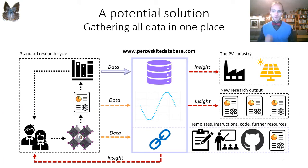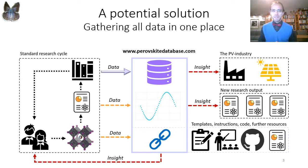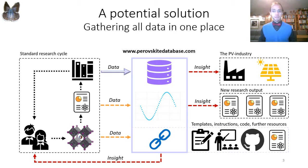A potential solution to that specific problem would be to collect all perovskite data in one place, which happens to be the goal of the Perovskite Database Project. Our idea is to expand the standard research cycle with an open database where we can collect all perovskite data ever generated, and connect this to simple and interactive filtering and visualization tools. We believe this could help us get a better overview of the literature, enable entirely new insights, enable new types of projects, help us design better experiments, and thereby accelerate the pace of discovery.